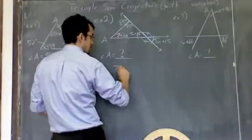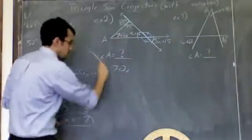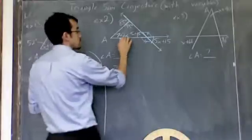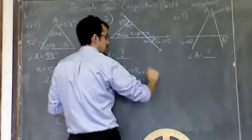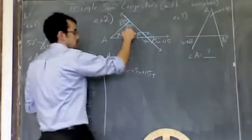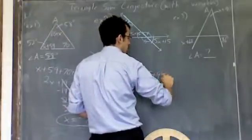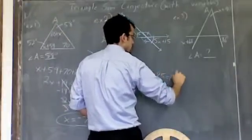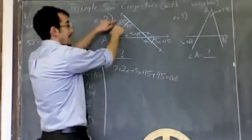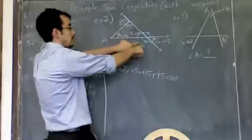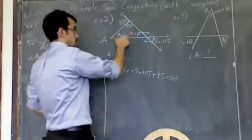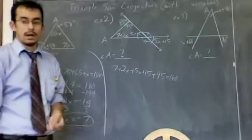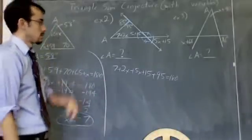So I'll start with this: 7 plus 2x. Let me put a line here so you don't get confused. 7 plus 2x plus the next one, 5x plus 15, plus the last one, 95, and that equals 180. Notice I'm not adding the 85 because that's outside the triangle. I'm not adding this 5x plus 15 again because it's outside the triangle. Just the three inside. And then, as per usual, combine like terms and solve.